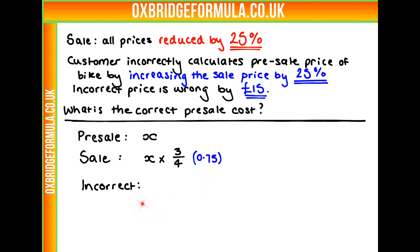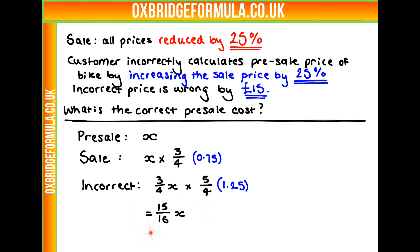What is going to be the incorrect price the customer calculated? Well, we know they took the sale price and increased it by 25%. So we multiply it by 125%, which is 5 over 4. That gives the incorrect price, which equals 15 sixteenths of X. So we have our incorrect price, our sale price, and our pre-sale price.